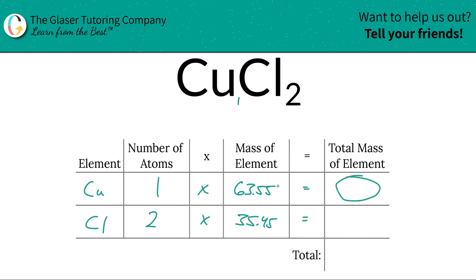Then to find the total mass of the element, all we simply have to do is take the number of atoms and multiply it by the mass of that element. And this is 63.55 for copper. And then for chlorine, you've got to take two and multiply it by its weight. And that works out to be 70.90.